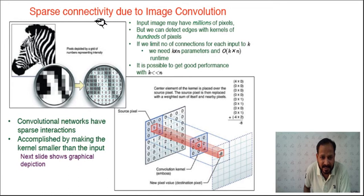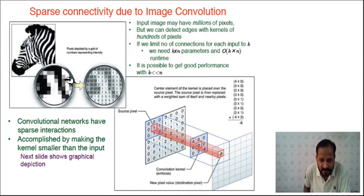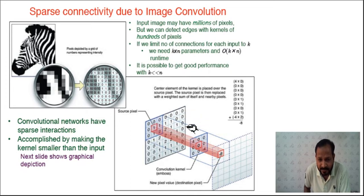Sparse connectivity or sparse interaction arises because we use convolution with a small filter. Consider this small portion of an image with black and white pixels — black pixels have higher values around 8-10, and white portions have lower values 0 or 1. This small portion is extracted and shown as a matrix of pixel values.